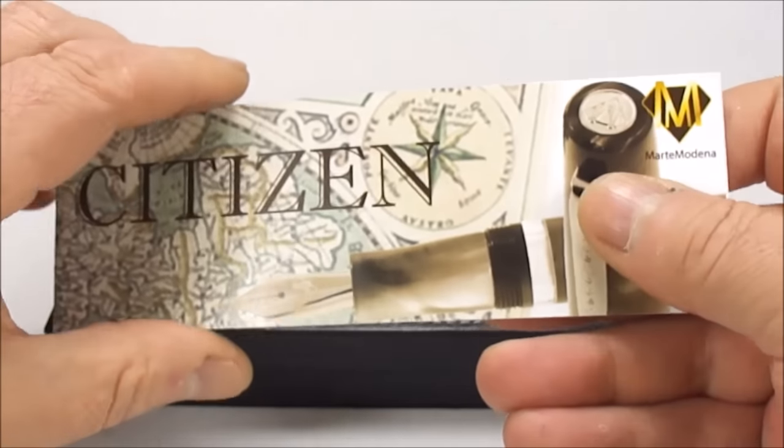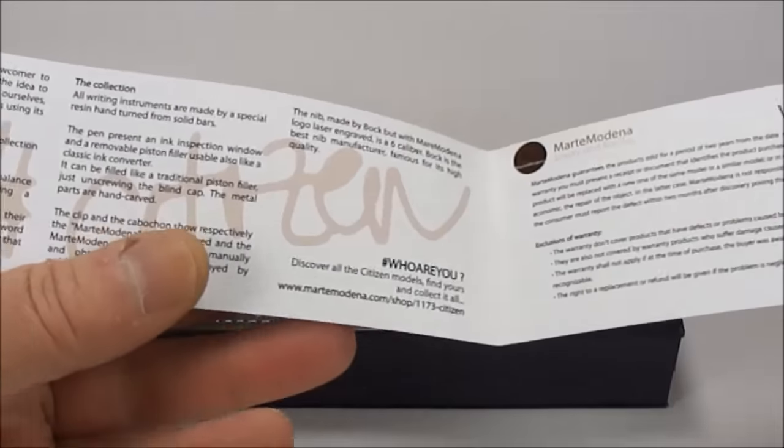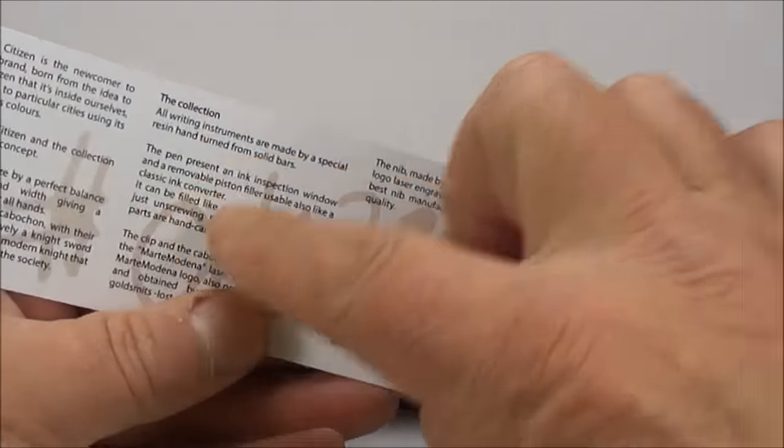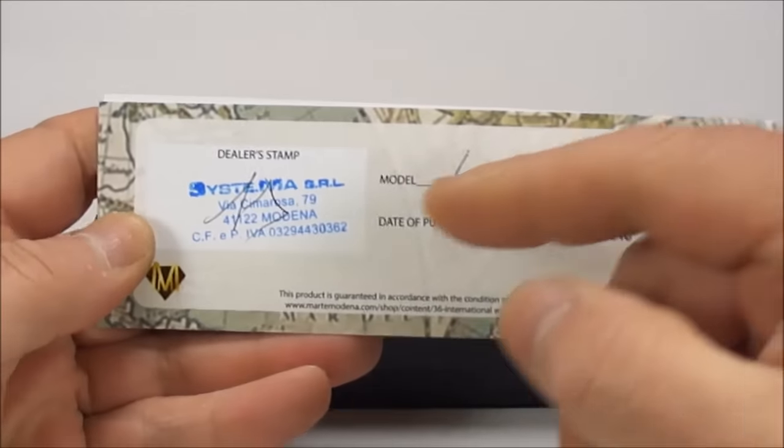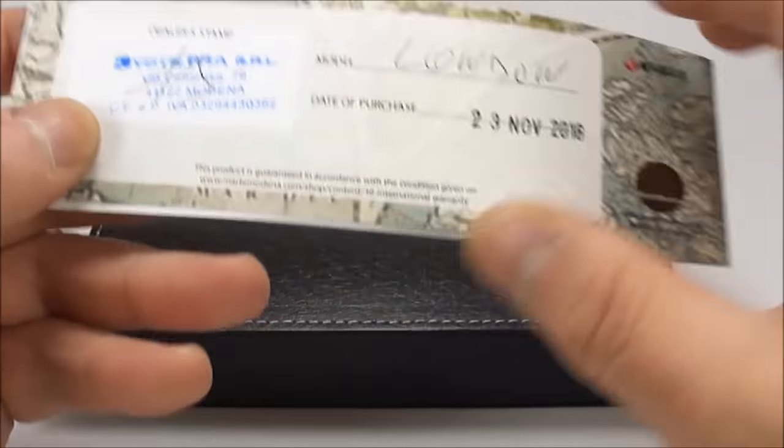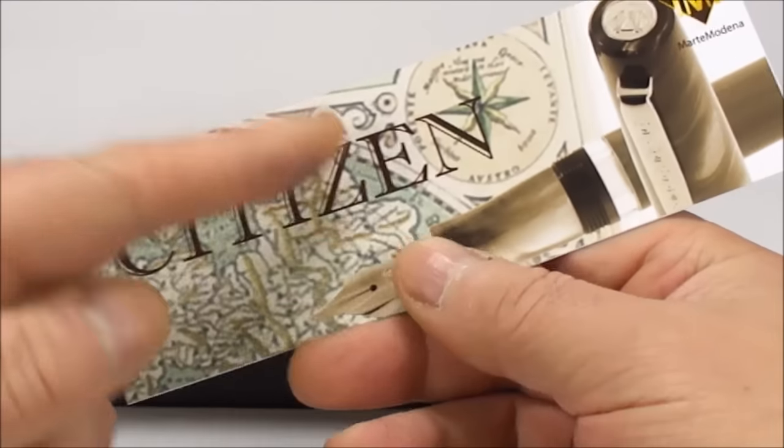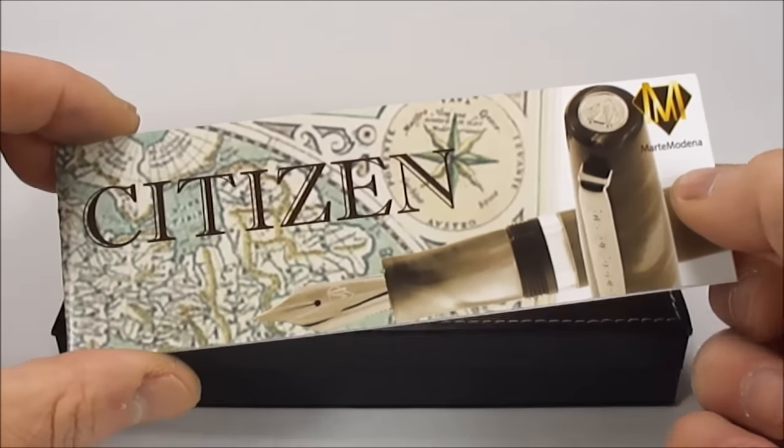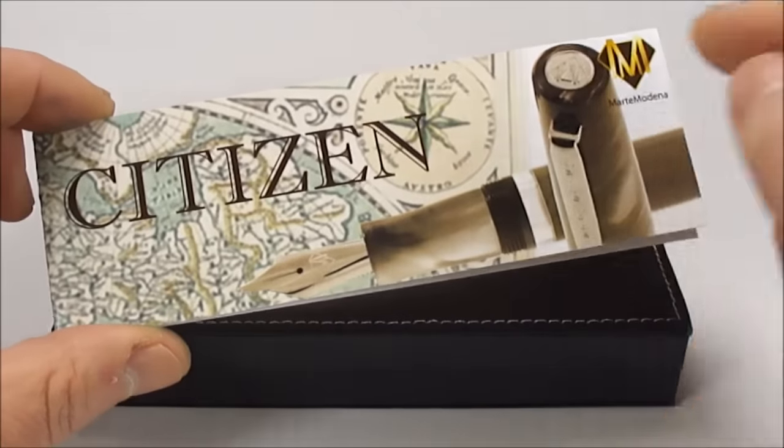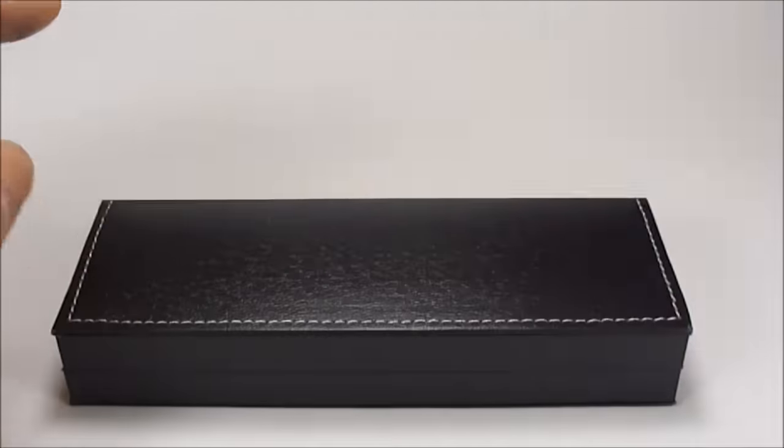Inside you'll find the Citizen instructions and some information about the pen. You've got the warranty and of course the dealer stamp, date, the model, and the beautiful thing about this particular range of pens, the Citizens, is that they provide you with a two-year warranty which I think is very good for a pen.